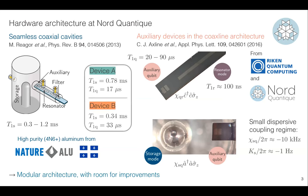In this presentation I will show data from two devices. The first device is the result we presented at the March meeting this year, with a really small T1. The second device is slightly improved — about twice T1. These are the results I will show over the rest of the presentation.